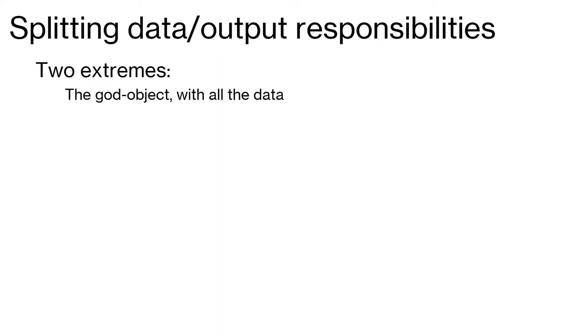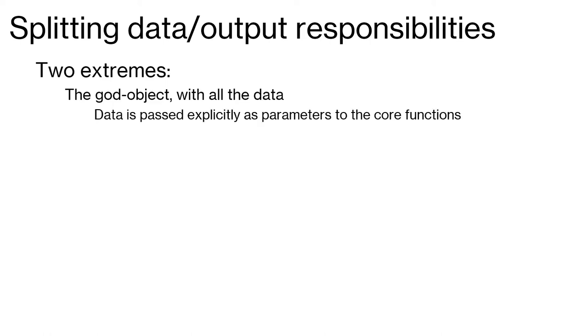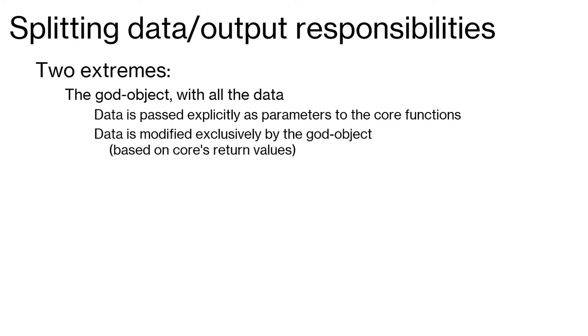What we really want are unique ownerships and unique responsibilities for pieces of data, in order to completely avoid shared modification. So let's see if we can split these data and output responsibilities. The one extreme is to put everything in one place — but in order to use the core-shell divide we need to pass this data explicitly as parameters down to the core functions, and everything is passed back up into a single god object which then modifies its own local state. This ends up being one object containing what is effectively a set of semi-global variables.